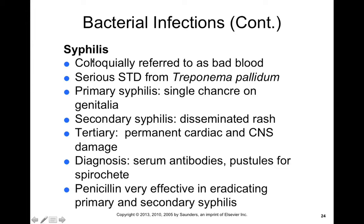Syphilis is also one of these bacterial infections of skin — colloquially referred to as 'bad blood.' It's a serious STD transmitted by Treponema pallidum, a spirochete transmitted sexually. Primary syphilis is really just the chancre in the genitals. However, secondary syphilis is where you get the disseminated rash — the primary infection goes dormant, spreads throughout the body, and infects the skin causing a syphilis rash. If left untreated, it can progress to internal organs like your central nervous system and heart, causing permanent cardiac and CNS damage, which could be life-threatening. It's diagnosed through serum antibodies and pustules that can be biopsied to determine the presence of a spirochete. Penicillin is very effective in eradicating syphilis; however, there are penicillin-resistant strains now.